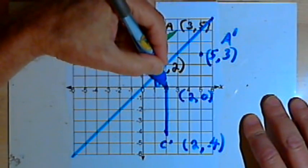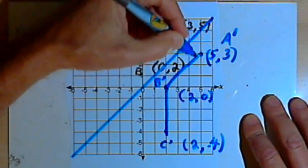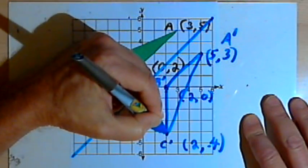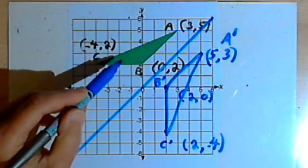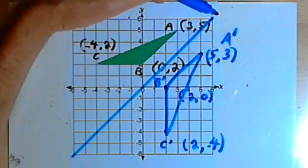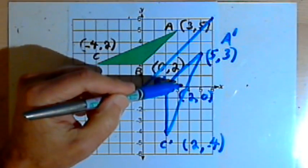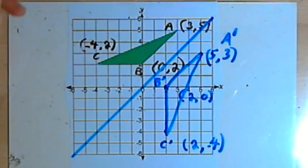And now I'll connect those three points. And I've got the original image reflected across that diagonal, x equals y, to form the reflected image. That's about it. Take care, I'll see you next time.